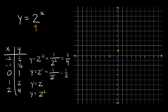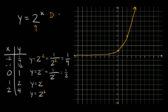Let's plot those points: (-2, 1/4), (-1, 1/2), (0, 1), (1, 2), and (2, 4). You can see we get really close to the x-axis but never touch it — that's the asymptote on the x-axis. The domain is all real numbers, or from negative infinity to positive infinity, and the range is y greater than 0.